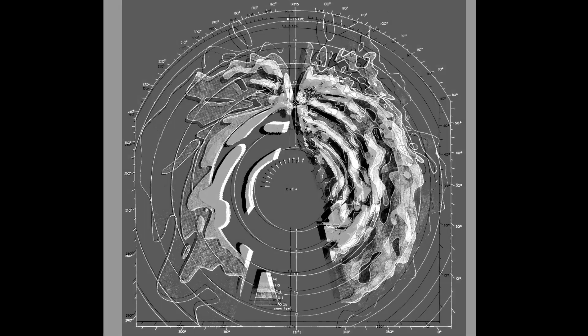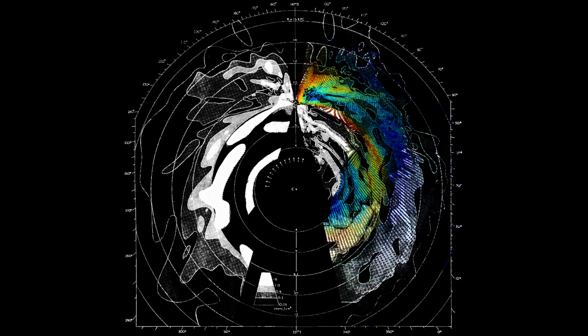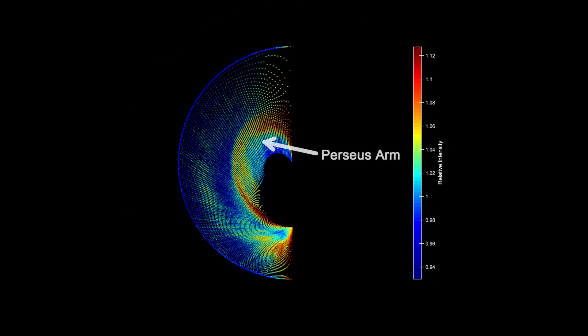If we compare our map to theirs, we find that we agree on the locations of several important features. Today, we know that this larger section is part of the Perseus arm. This shorter bit is part of the Sagittarius arm. And this more distant piece is known as the outer arm of the Milky Way.